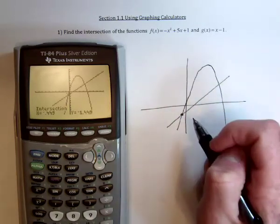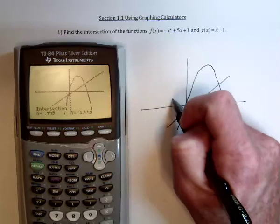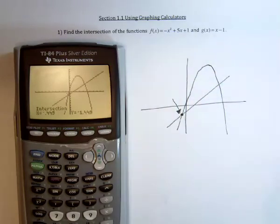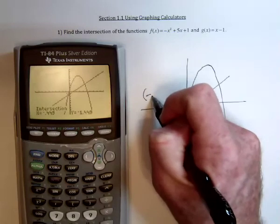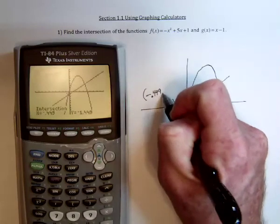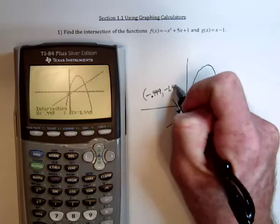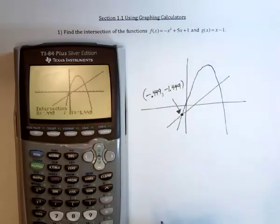And we just found this intersection point to be negative .449 for the x value and negative 1.449 for the y value.